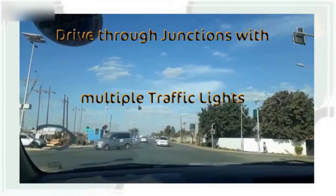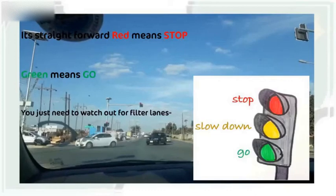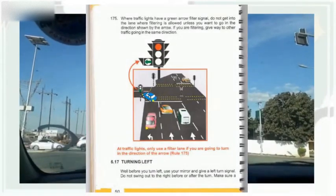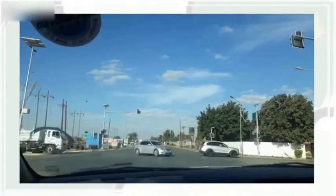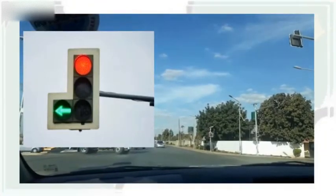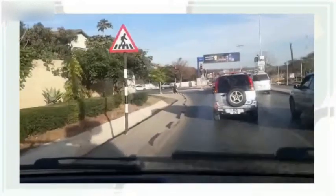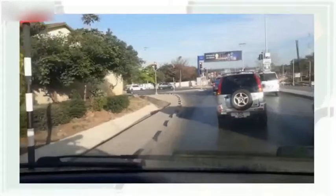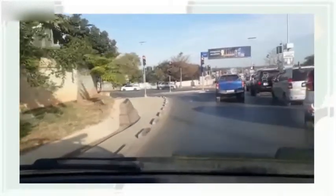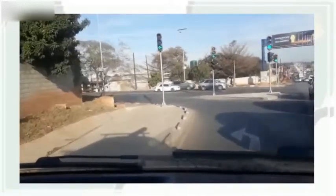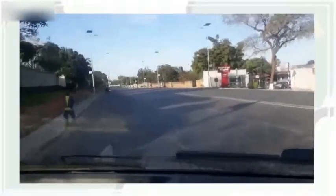For traffic lights, it's straightforward: red means stop, green means go. We just need to watch out for filter lanes. The highway code says only use a filter lane if you're going to turn in the direction of the arrow. So if the arrow gives green to the left, you can go left; if it gives green to the right, you can go right. So we are now on Mozambique Road and we want to go to Lake Road. We're going to be patient and wait until the left arrow gives green — and there we go. It gives green, so we can go.